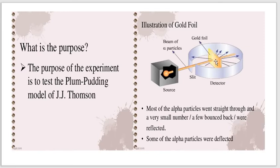The thin sheet is called the gold foil. Gold is used because of its highly malleable property, so it can be made into a very thin foil. The thickness of the sheet is approximately 8.6 × 10⁻⁶ cm. On the other side of the gold foil, there is a zinc sulphide screen. This screen was movable so as to receive alpha particles scattered at angles varying from 0 to 180 degrees.